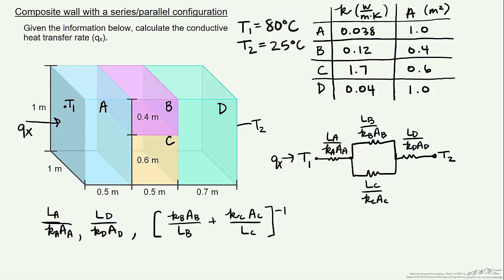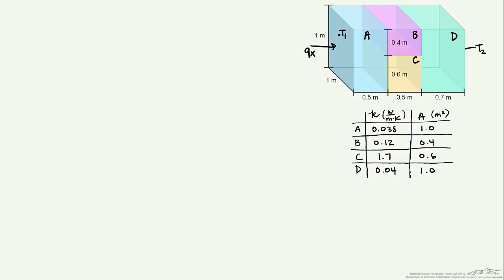So let's use now this information to find our resistances. So we'll first find the resistance of A, that's our L, 0.5 meters. We divide that by our K, 0.038 watts per meter kelvin, times our area, which is 1 meter squared, and this is going to equal 13.2 kelvin per watt.